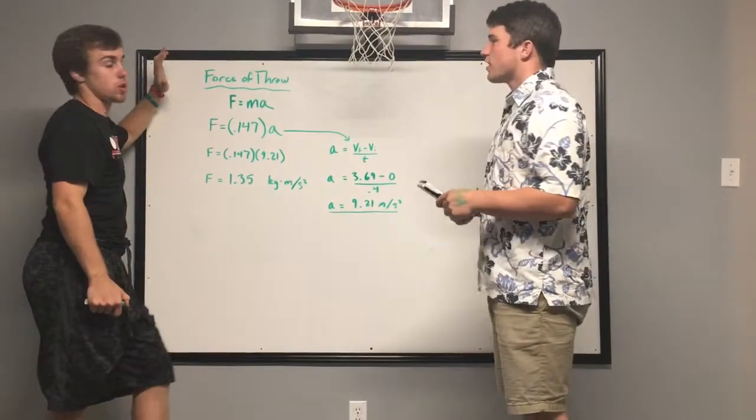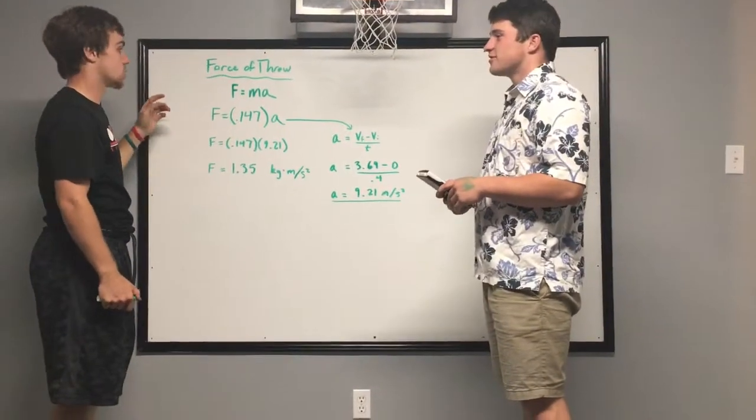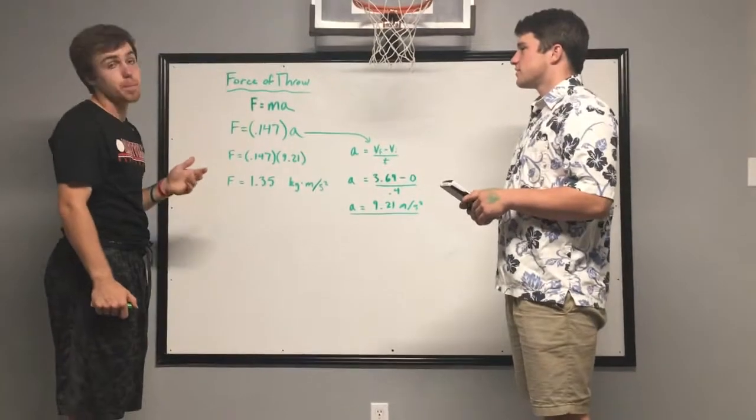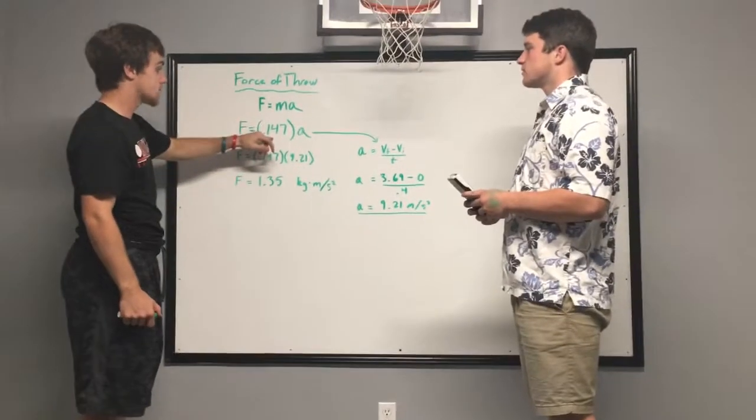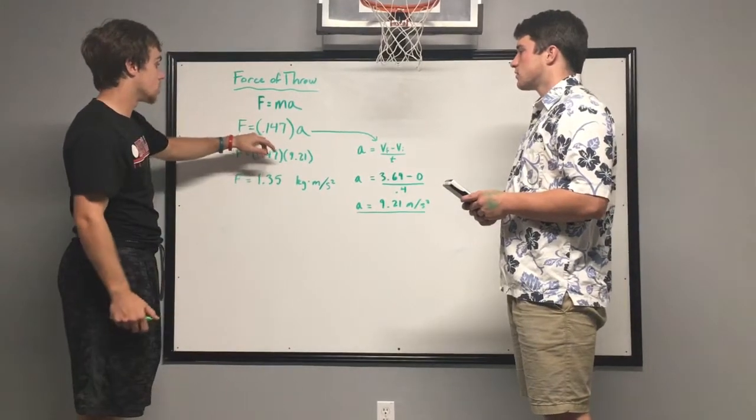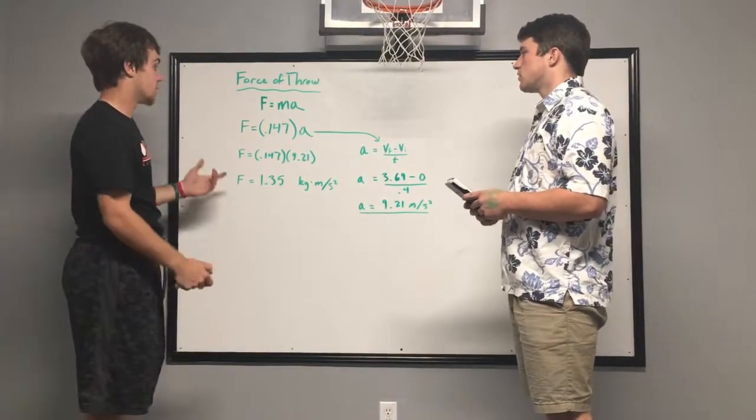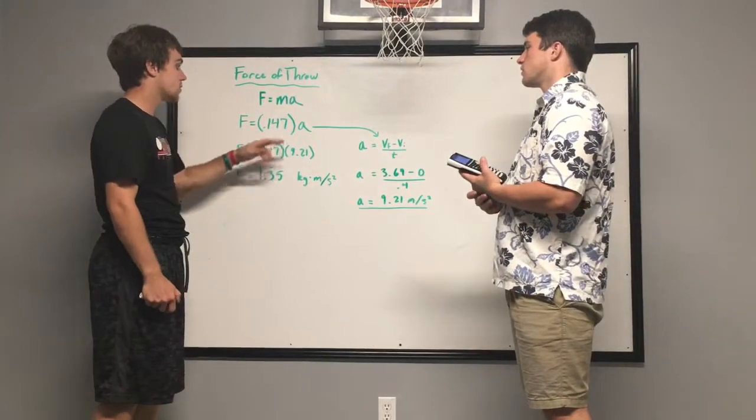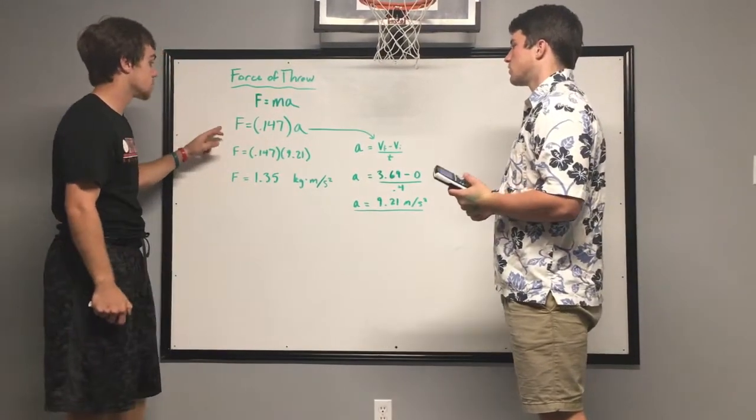Next we're going to determine the force of the throw. So we're using the equation F equals ma. And we determined the mass by getting our water bottle and scaling it, and we got it to be 0.147 kilograms. But since there are two unknown variables in this equation, we had to find acceleration before we complete this.